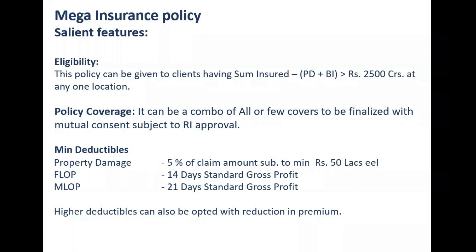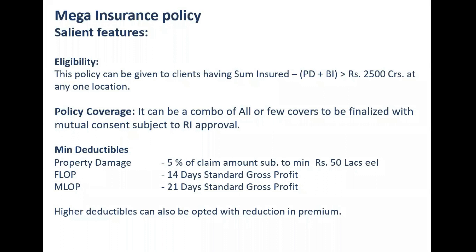Now coverage - it can be a combo. People are under the impression that it always has to be a combo, but that is a wrong notion. It can be a single peril alone, like fire. This is the beauty of this mega or large risk policy - a lot of freedom has been given by IRDA, no binding. I'll explain the difference between the IAR policy and mega policy. It can be a combo, or you can take a single policy that can also qualify for mega, provided the location sum insured is more than 2500 crores. And this is MD plus PI, whereas in the IR policy, this is PD alone - it is not PD plus PI. Here it is PD plus PI.